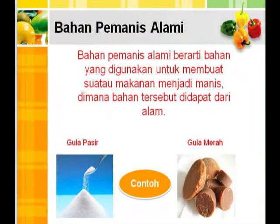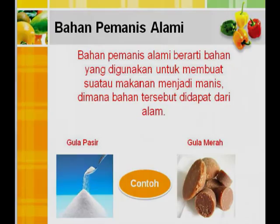Bahan pemanis alami merupakan bahan yang digunakan untuk membuat suatu makanan menjadi manis, di mana bahan tersebut didapat dari alam. Contoh dari bahan pemanis yang banyak dikenal oleh masyarakat yaitu gula pasir dan gula merah.